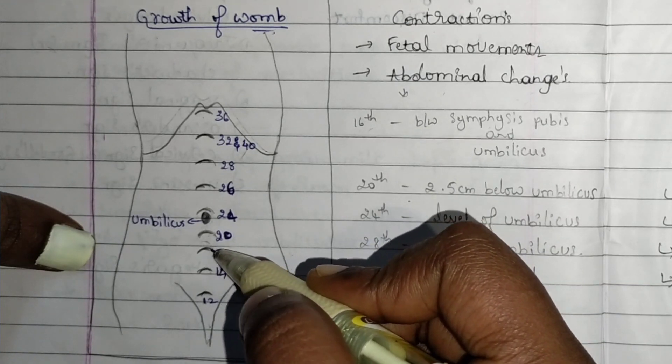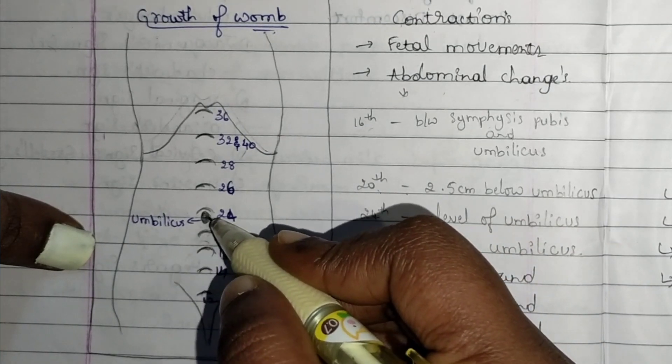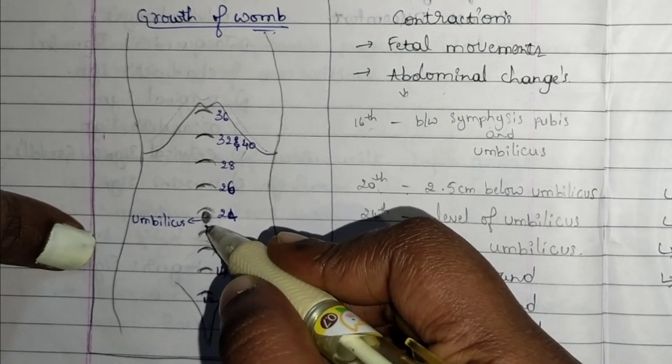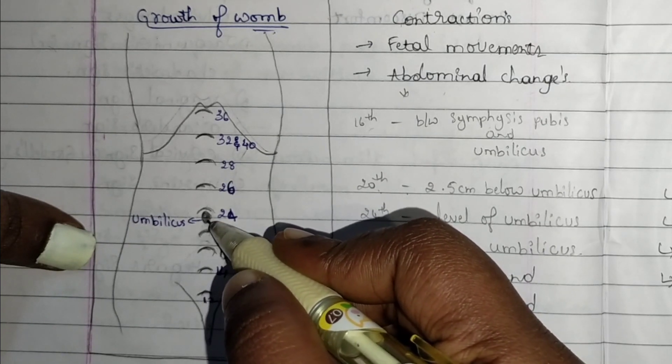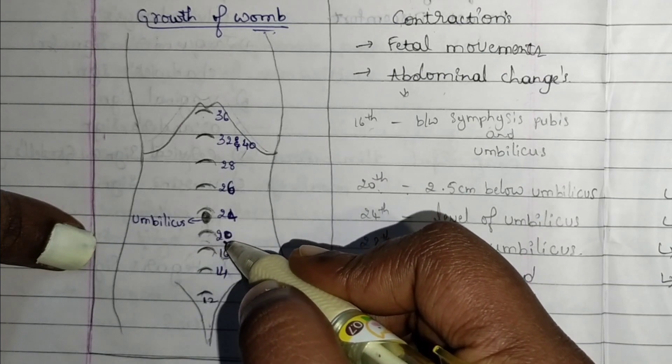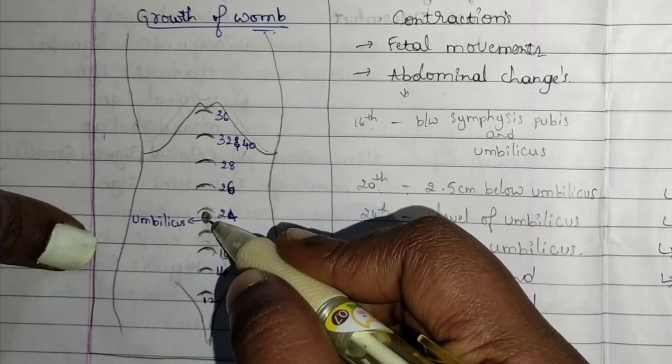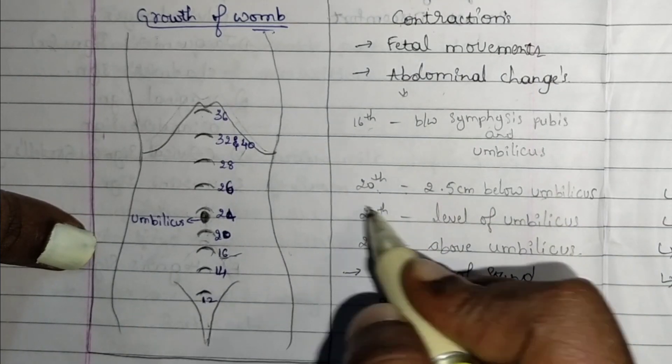At 20th week, the uterus will be expanded and present just below the umbilicus. The distance between symphysis pubis and the uterus is 2.5 centimeters below the umbilical level.